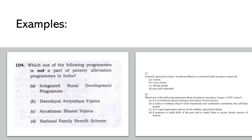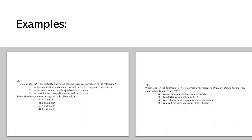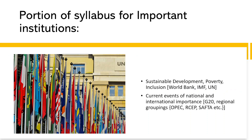With just two to three things in mind, you can solve most scheme-related questions, and there is no randomness — most questions will come from health or poverty alleviation. Question number 105 asks about the features and beneficiary of the Pradhan Mantri Shram Yogi Mandhan scheme, which is a voluntary pension scheme for unorganized sector workers like street vendors and small shop owners. By just understanding the options, you can easily solve these types of questions. That's all you need to do as far as schemes are concerned.